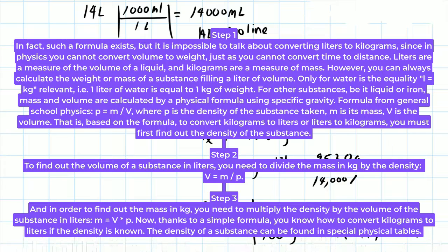Step 3. And in order to find out the mass in kg, you need to multiply the density by the volume of the substance in liters: m equals v asterisk p.